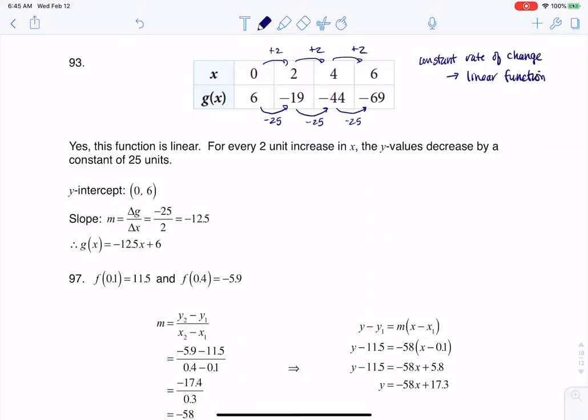And whenever you have a constant rate of change, you're looking at a linear function. So I can say yes, this is linear. And if I want to look at that ratio of the change in y over change in x, the y's were changing by negative 25, and the x's were changing by 2. So we have our slope here, our change in y over change of x of negative 12.5.